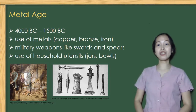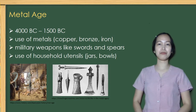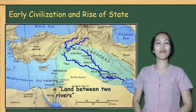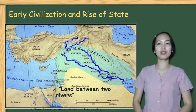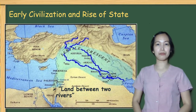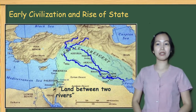Likewise, a more developed social, cultural, political, and economic system were established. One of the earliest states and civilizations was founded in the Fertile Crescent, which is known as the Mesopotamian civilization. The word Mesopotamia is a Greek word for 'land between two rivers,' which is often referred to as the cradle of civilization.